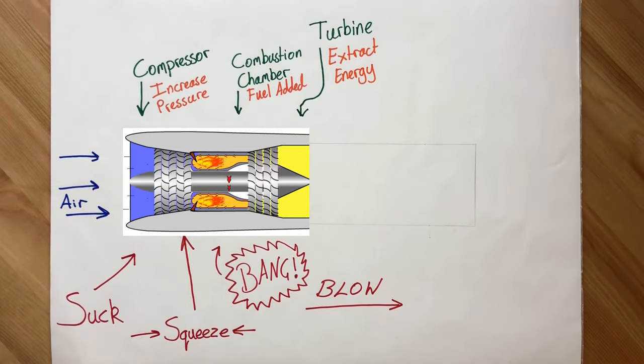Remember I mentioned the first set of blades to compress the air at the beginning? Well, this turbine takes energy out of the air and then passes it to the compressor via a shaft. It's what provides the energy to turn the blades in the first place.